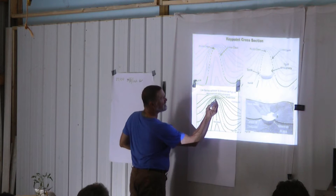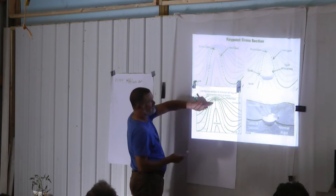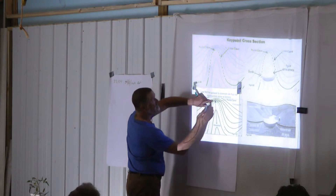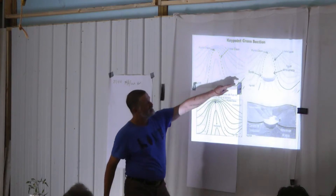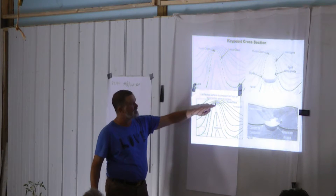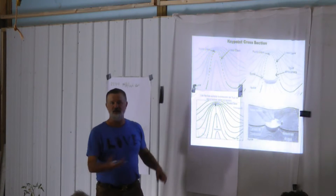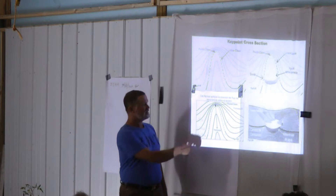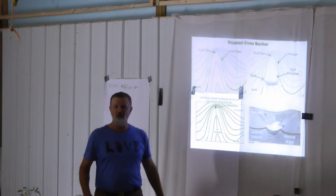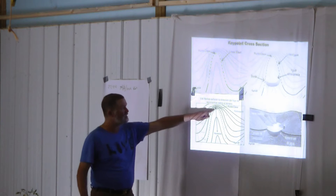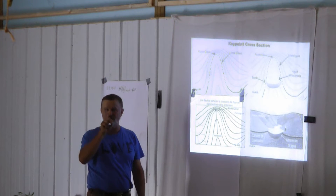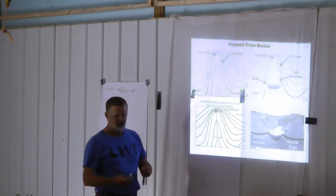So they found the key point here. Notice it's kind of like forward of it, back of it, right on it — where is it exactly? Well, this is out of Yeomans. Mollison's books show it somewhere kind of right up in there. What is the key point? Is it one tiny point? It's kind of right around in here.